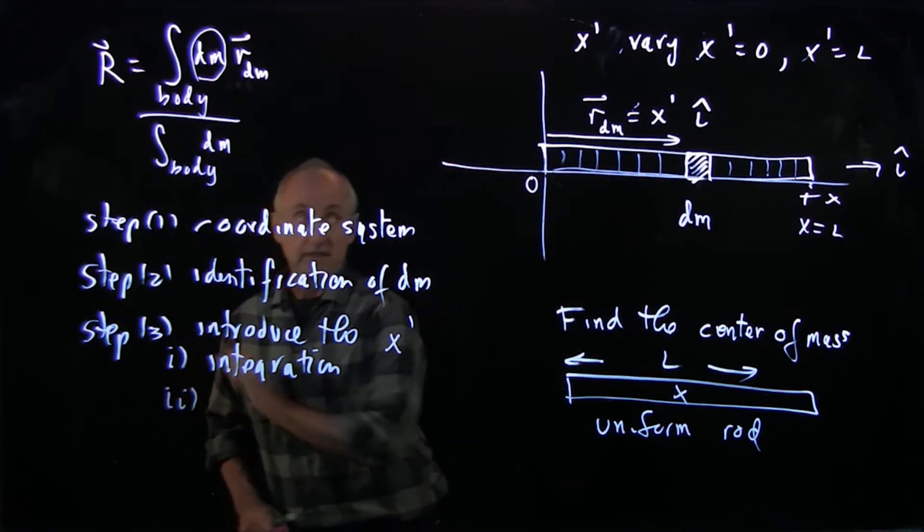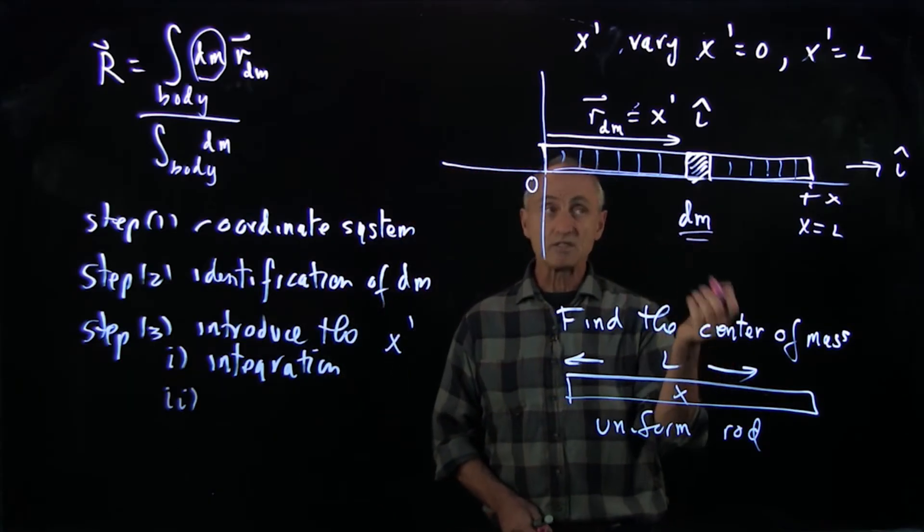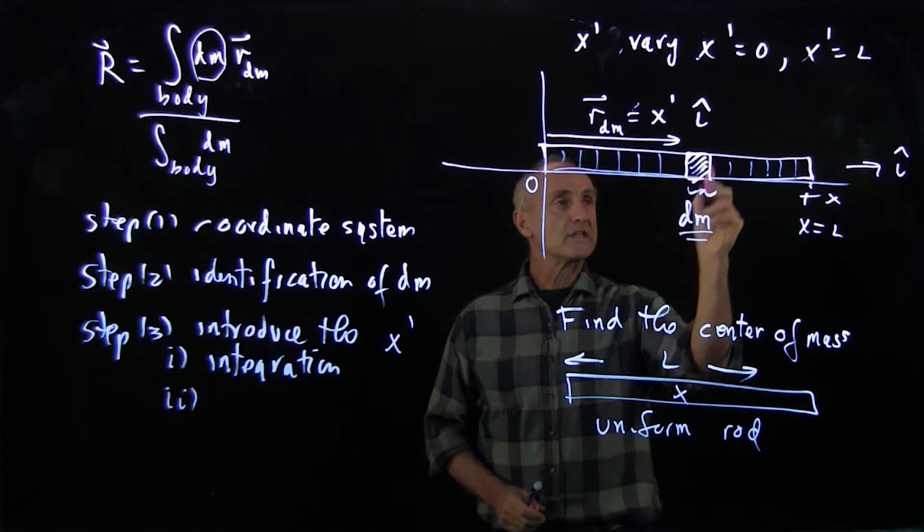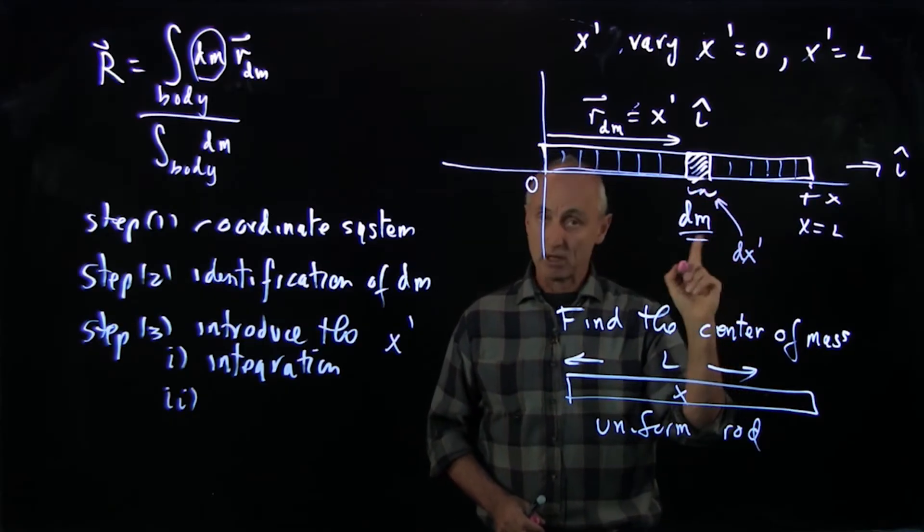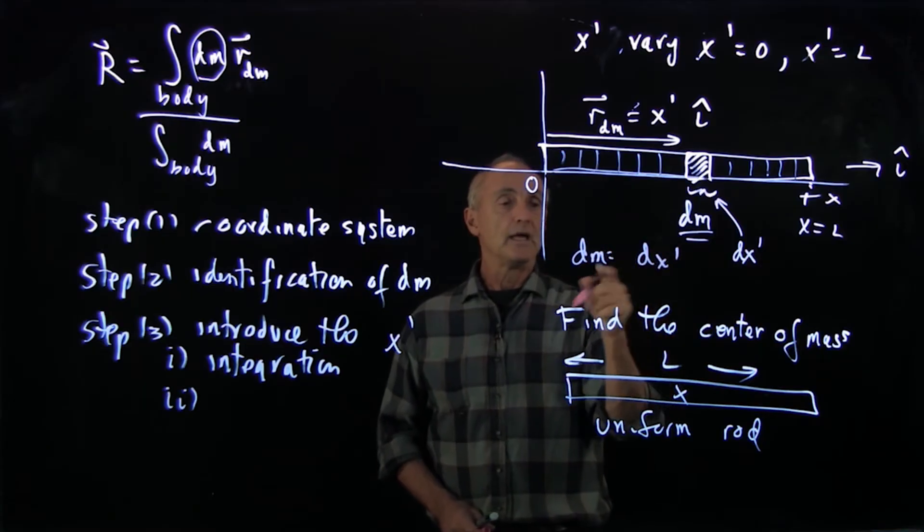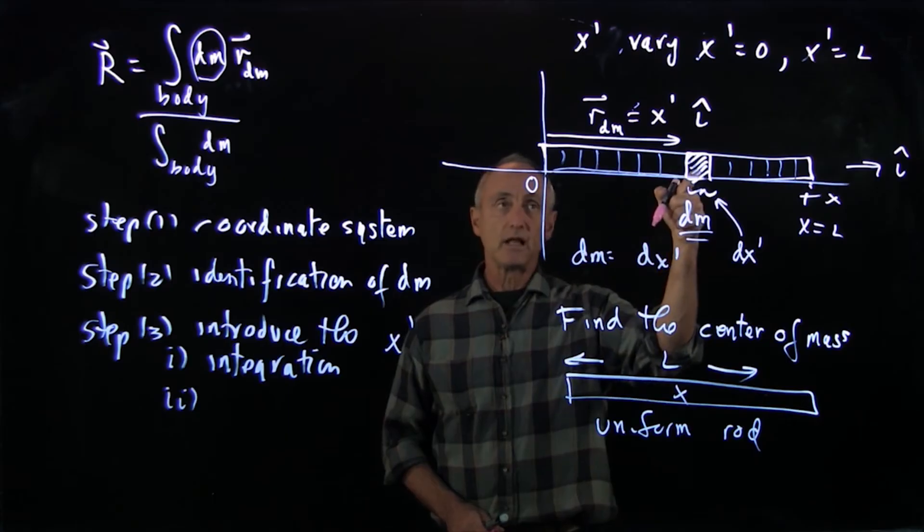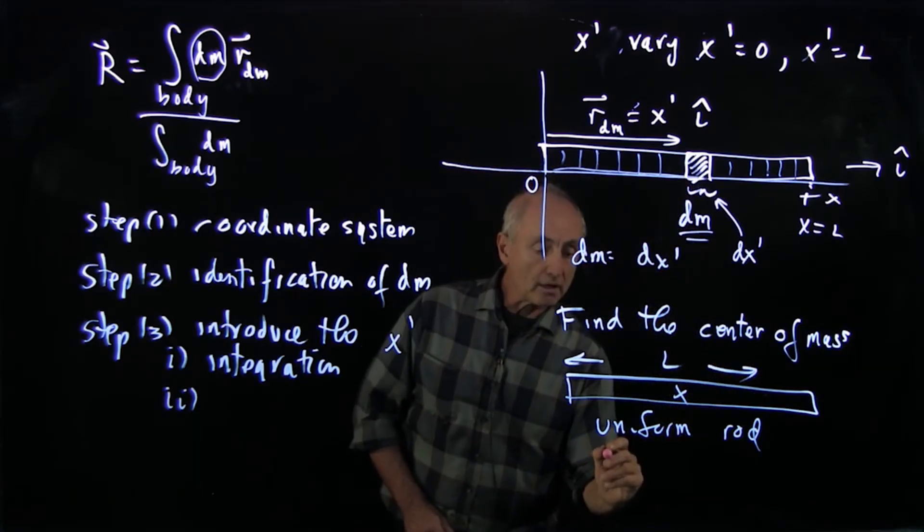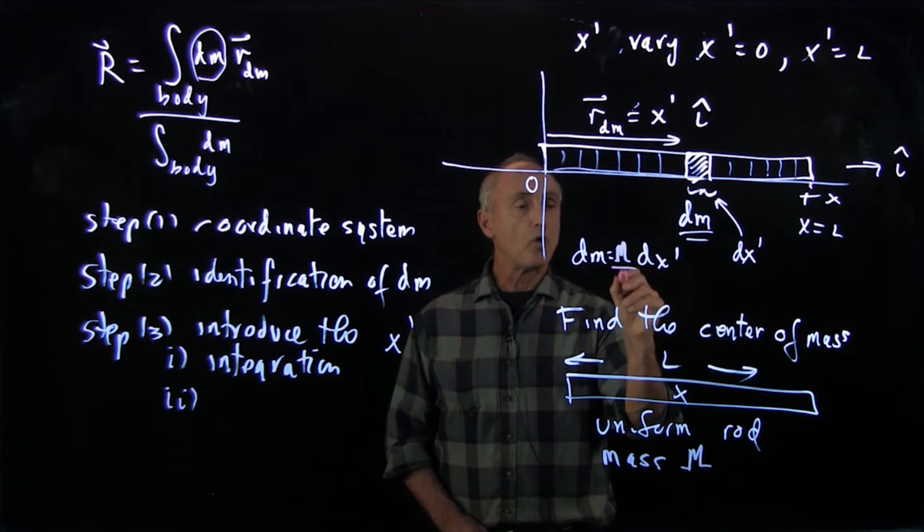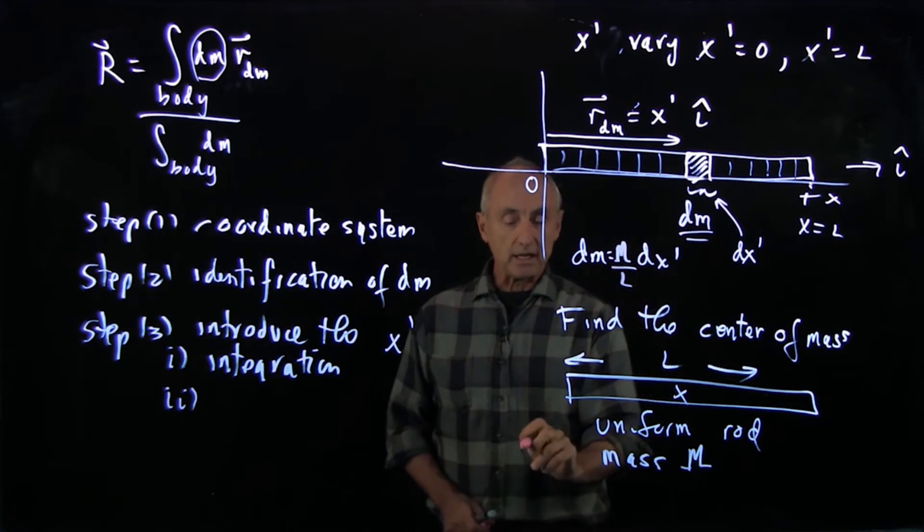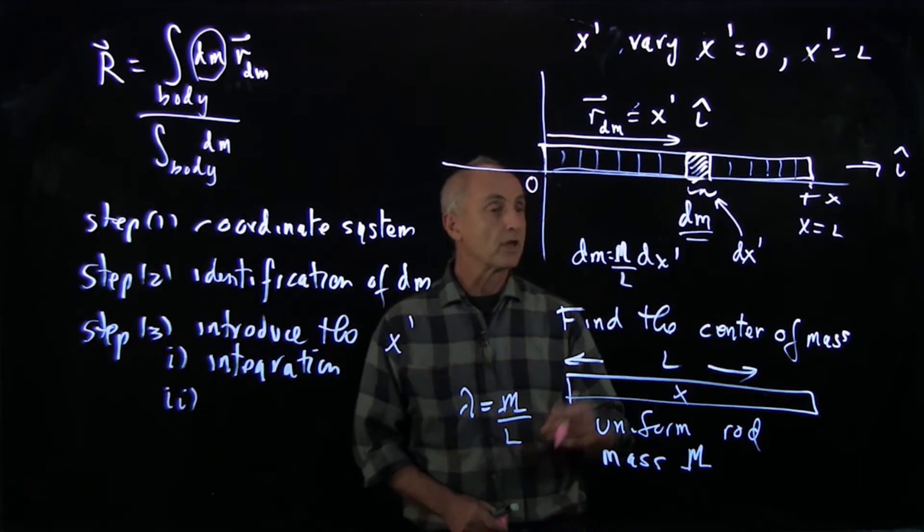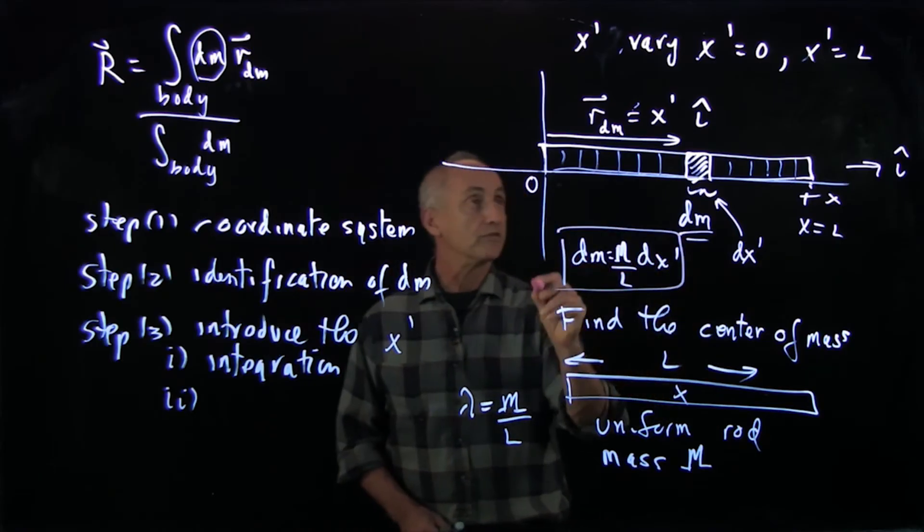Now, the second place that the integration variable comes in is dm. I want to express dm in terms of x prime, which is a measure of where this object is. And that's how, if we choose this length here to be dx prime, notice in terms of the integration variable, then I have a relationship between dm and dx prime. dm is mass in this little element. dx prime is the length of the element. And if the whole object is a uniform rod with a mass capital M and a length l, then it's just given by m over l dx prime. And this quantity, m over l, is an example of a mass, linear mass density, which we have a skill challenge about.